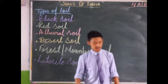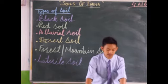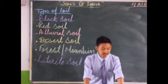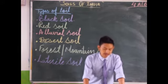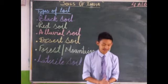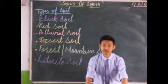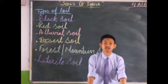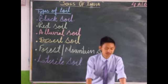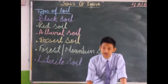Next is alluvial soil. This is the most suitable soil for growing food crops. It is found in regions drained by rivers and river deltas — for example, the northern plains of India. It is found in the states of Punjab, Uttar Pradesh, Bihar, West Bengal, Odisha, Assam, and Haryana. This soil is rich in minerals.